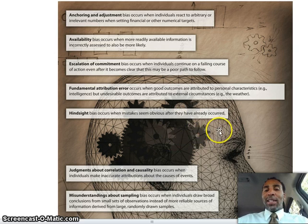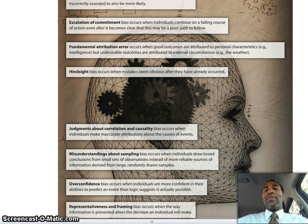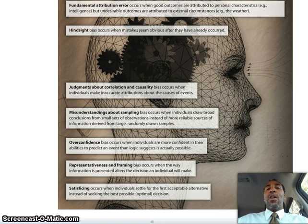Hindsight bias occurs when mistakes seem obvious after they have already occurred — like, 'oh yeah, that's what I was going to do, I just didn't have time.' But hindsight is not going to help you if you've already made the decision and already failed on the problem.